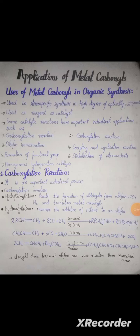Today we will discuss inorganic chemistry, specifically the most important topic: applications of metal carbonyls. Uses of metal carbonyls in organic synthesis include stereospecific synthesis of highly optically pure compounds, and their use as reagents or catalysts. Catalytic reactions have important industrial applications. A catalytic reaction is a chemical reaction between a catalyst and a reactant, including carbonylation, carboxylation, isomerization, coupling, and cyclization reactions.